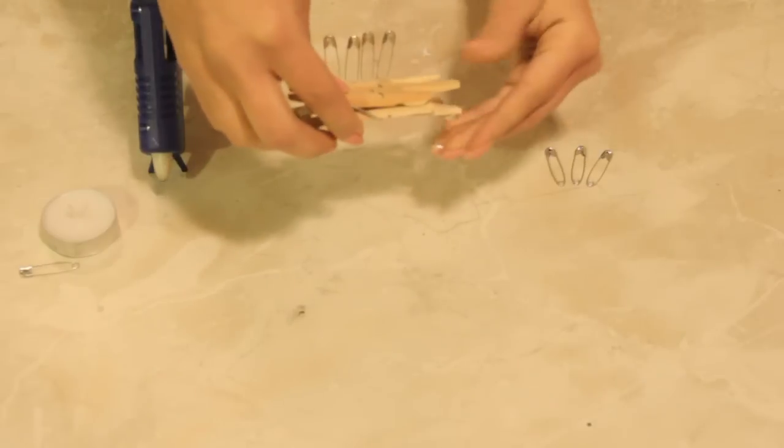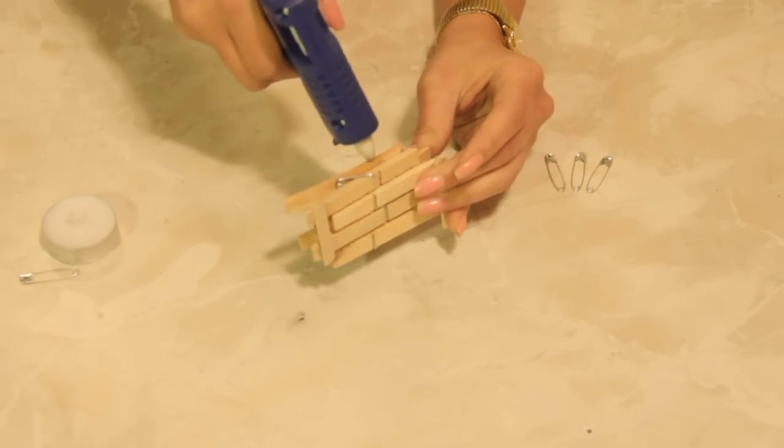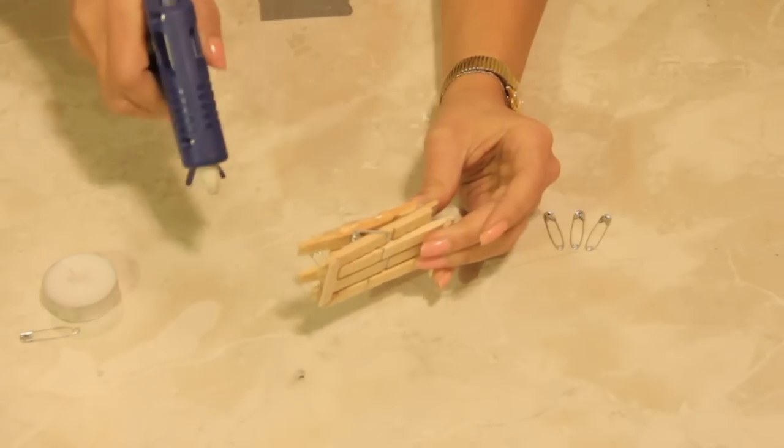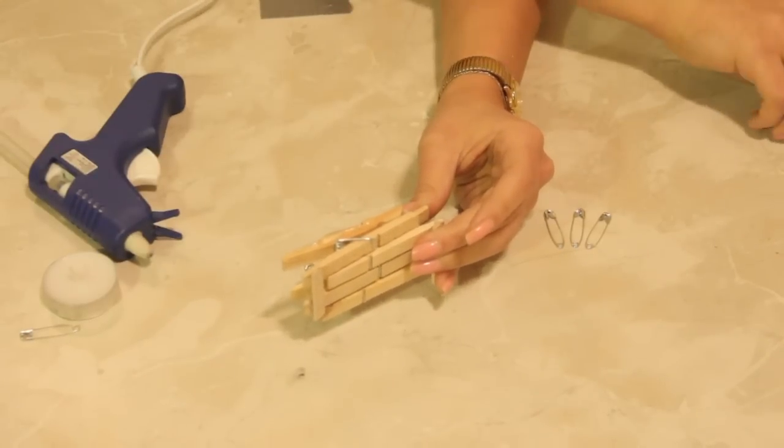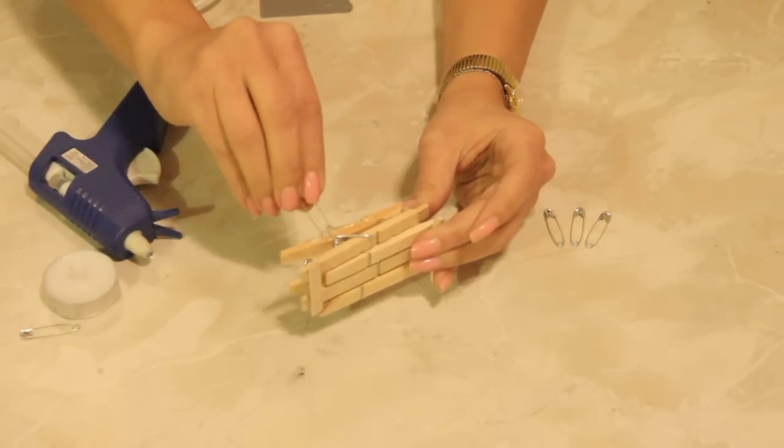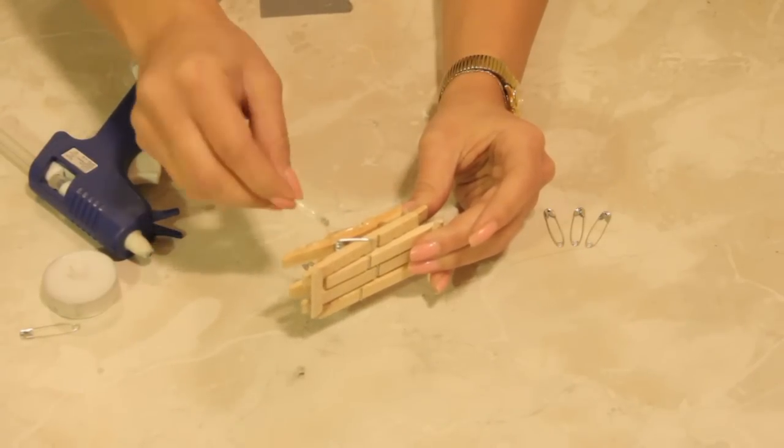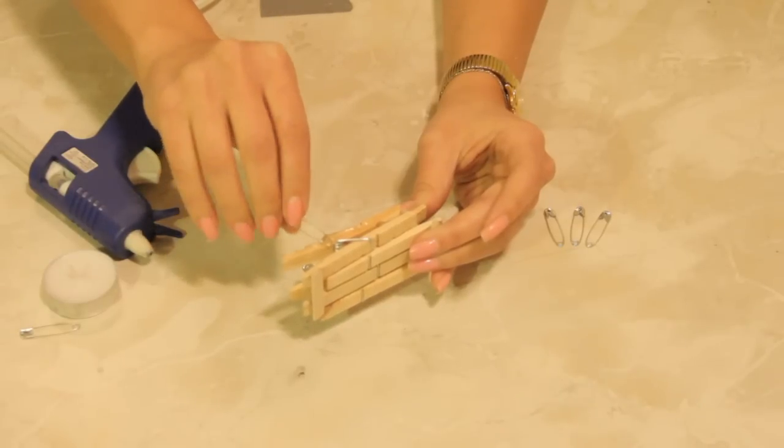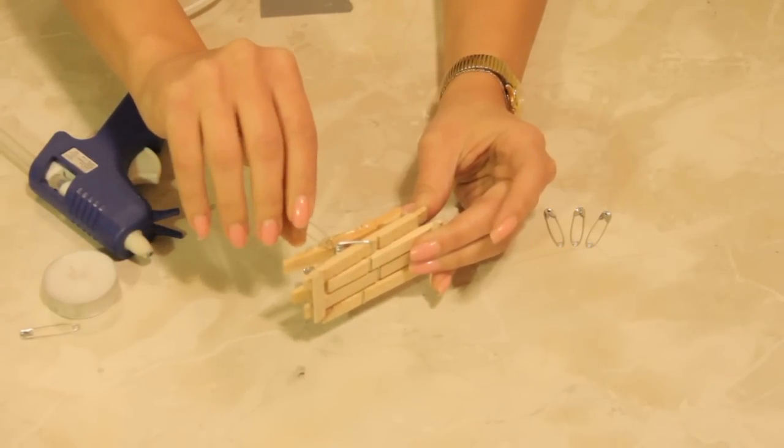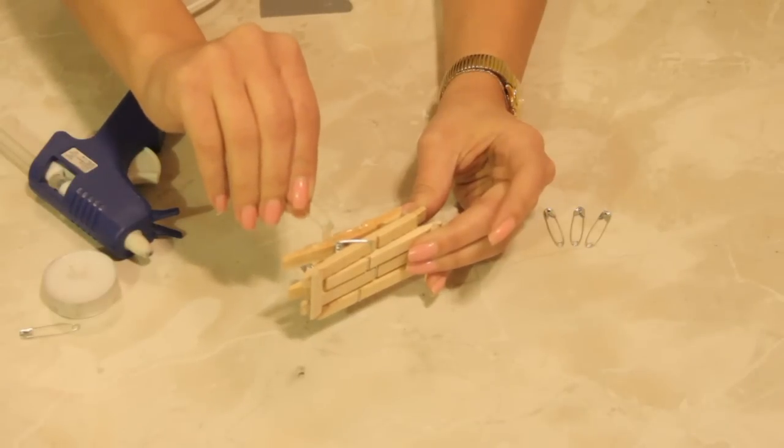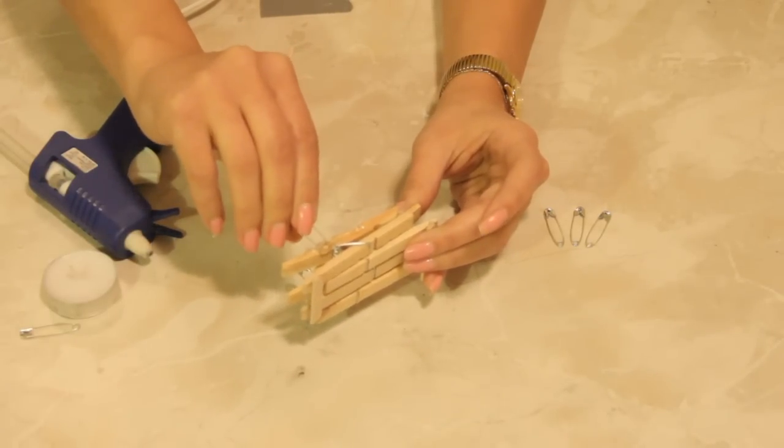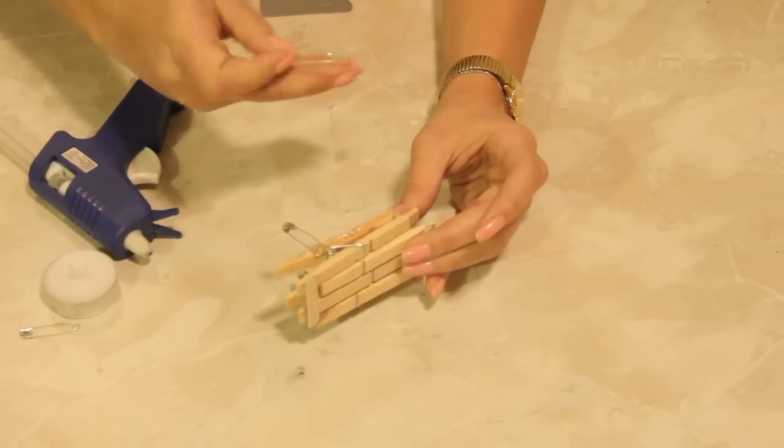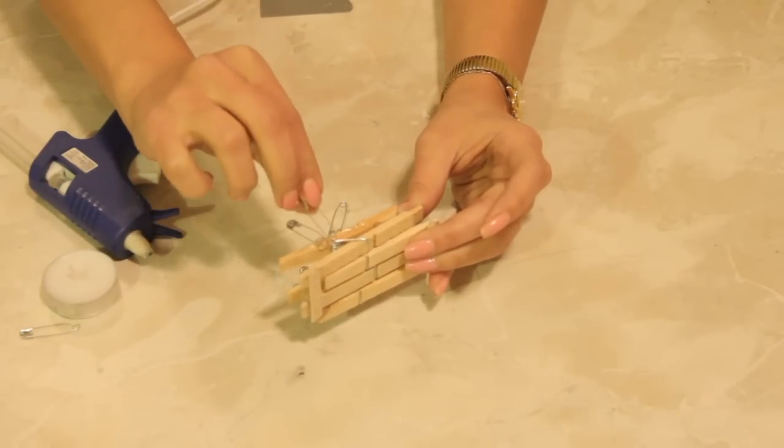Alright, and then we will do the same to the other side. You will want to wait while the glue hardens for just a couple of seconds before placing your safety pins on. Because otherwise they won't hold and you will just spend more time trying to stabilize them than actually applying them.